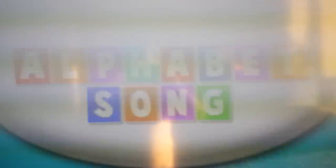Let's go! A is for anteater, B is for bear, C is for chimpanzee, D is for doggy, E is for elephant, and F is for fish and sea.